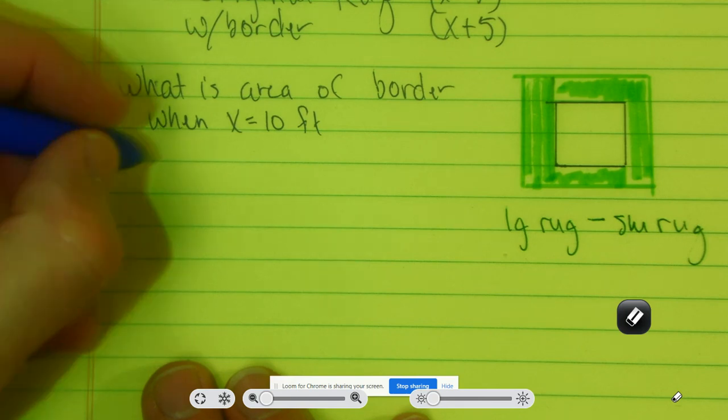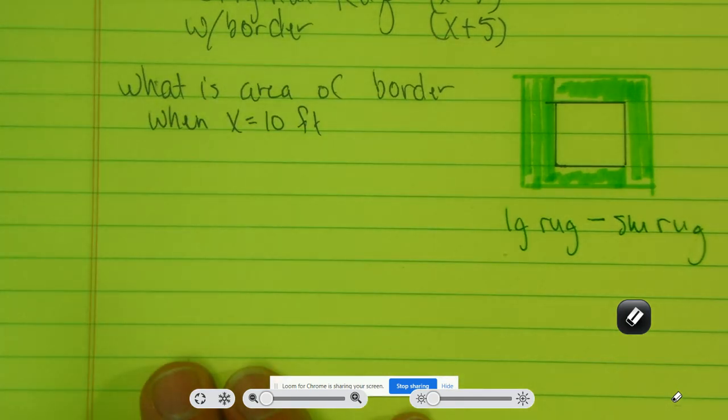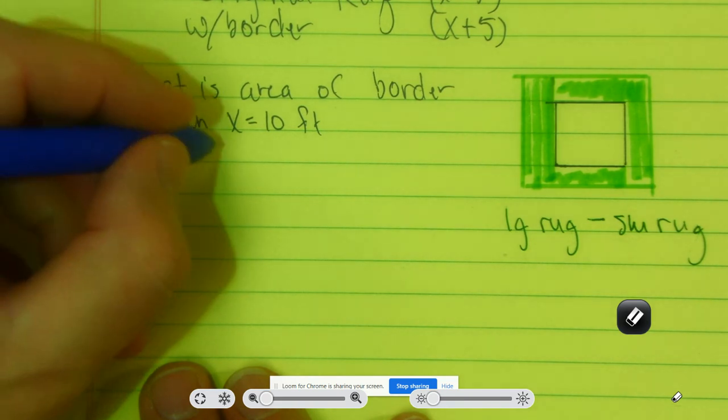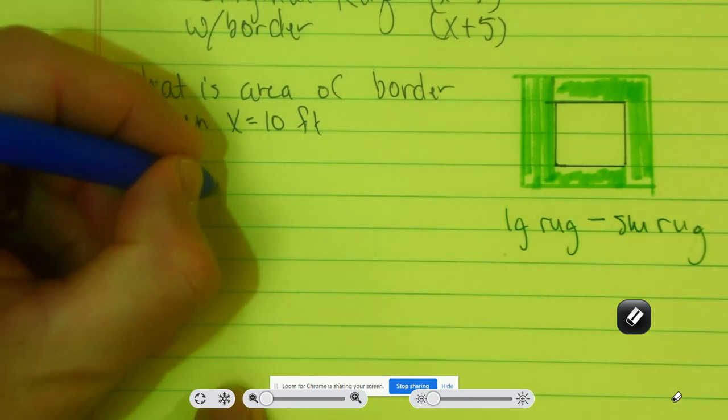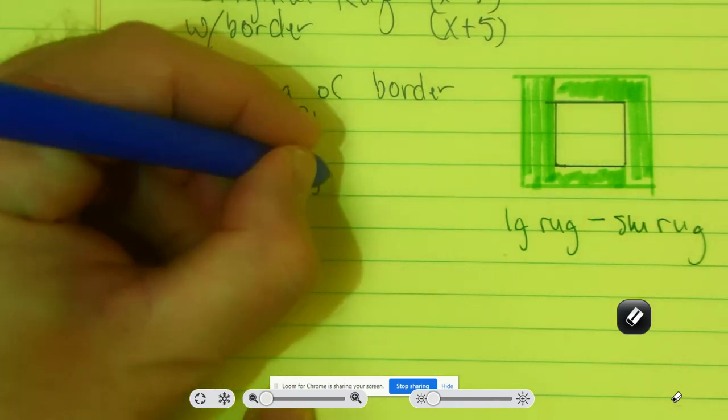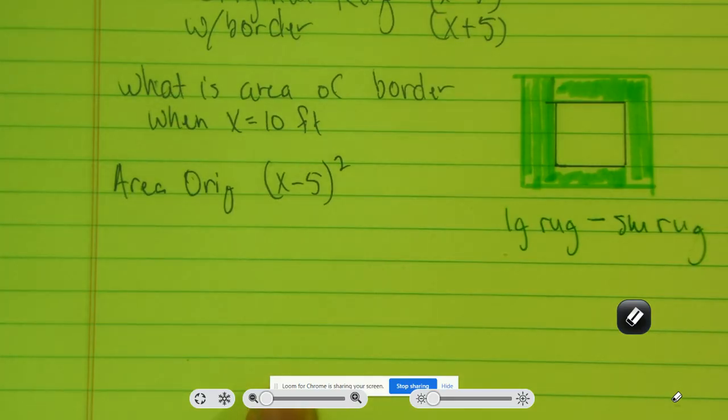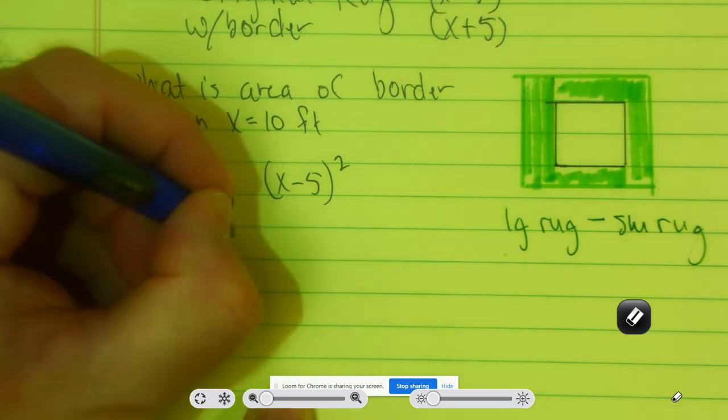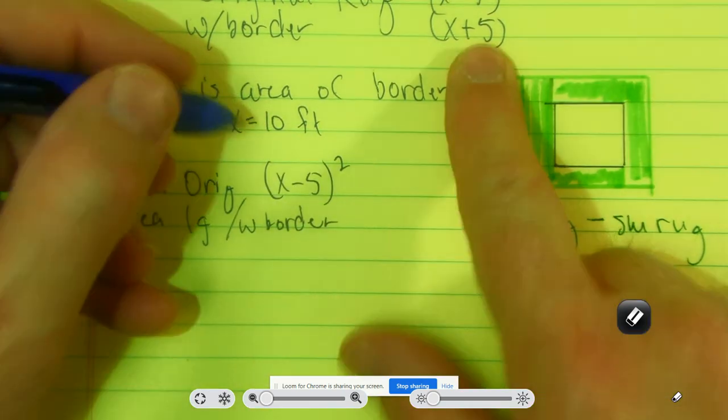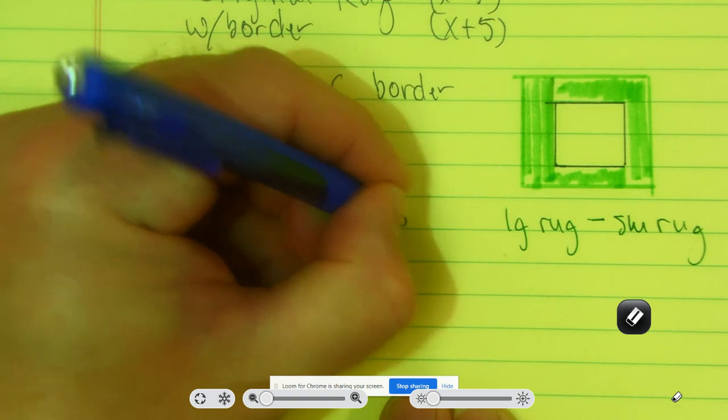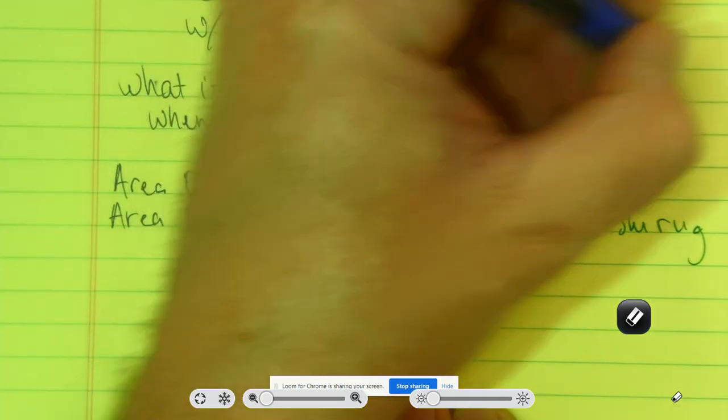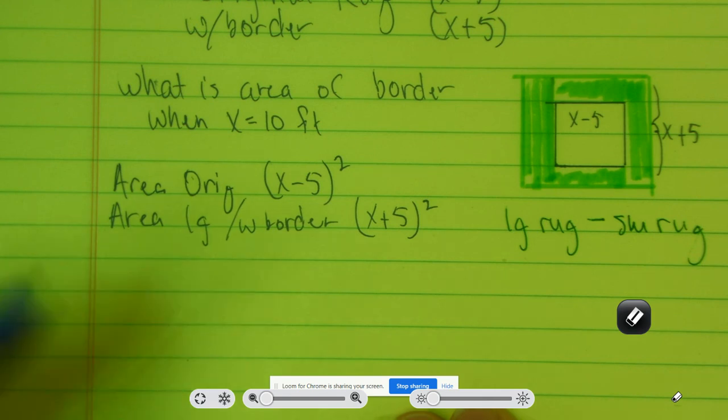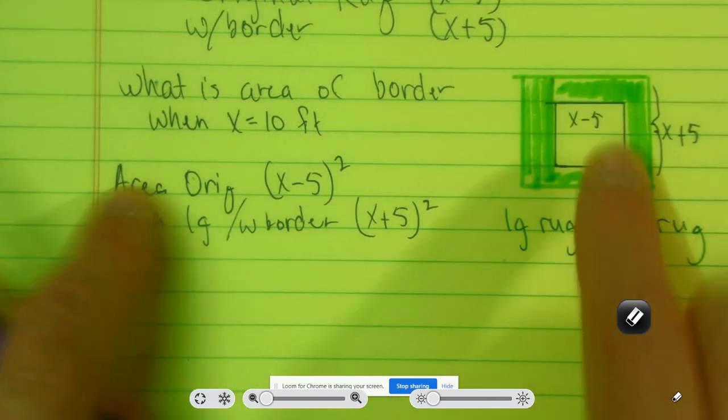So let's talk about what is the area of the original rug. Well, the area of the original rug is going to be the original one - the smaller one - it's going to be x minus 5 squared. The large one is x plus 5 squared. Let me label this: this is x minus 5, this side would be x plus 5. Then if I took the area of the large one and subtracted the area from the small one, I'd have the area of the border.